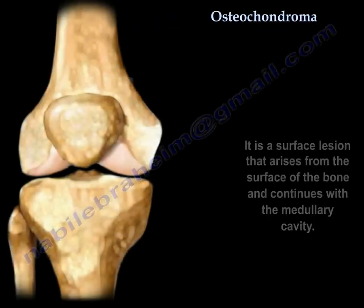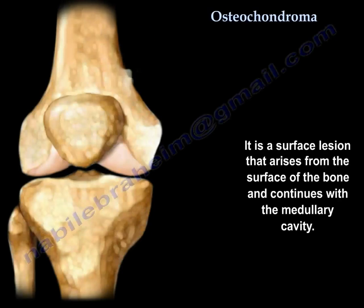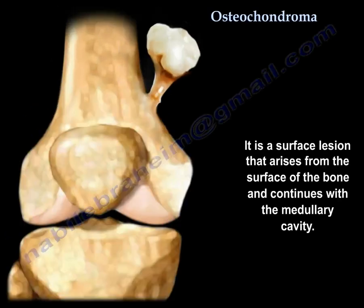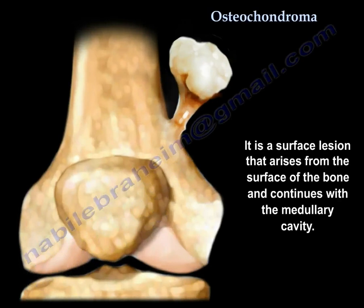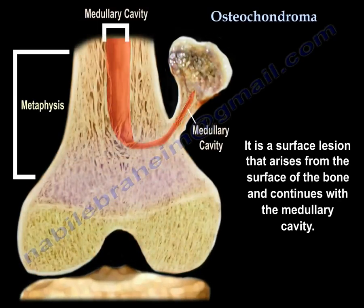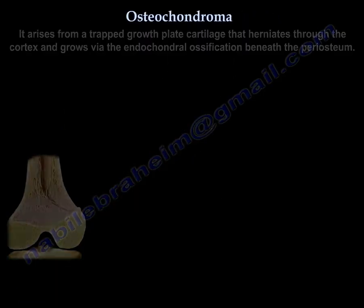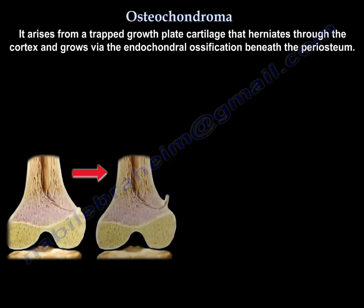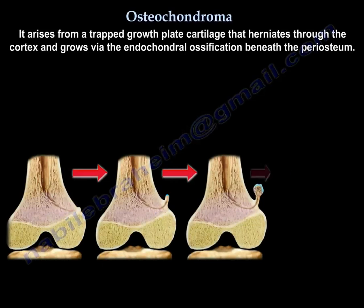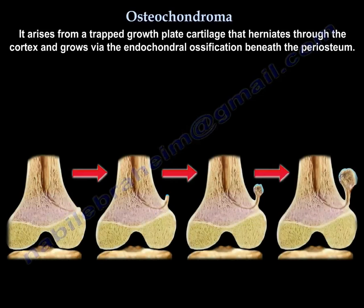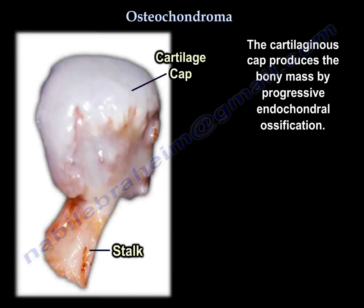Osteochondroma is a surface lesion. It arises from the surface of the bone and continues with the medullary cavity. It arises from a trapped growth plate cartilage that herniates through the cortex and grows via endochondral ossification beneath the periosteum. The cartilaginous cap produces the bony mass by progressive endochondral ossification.